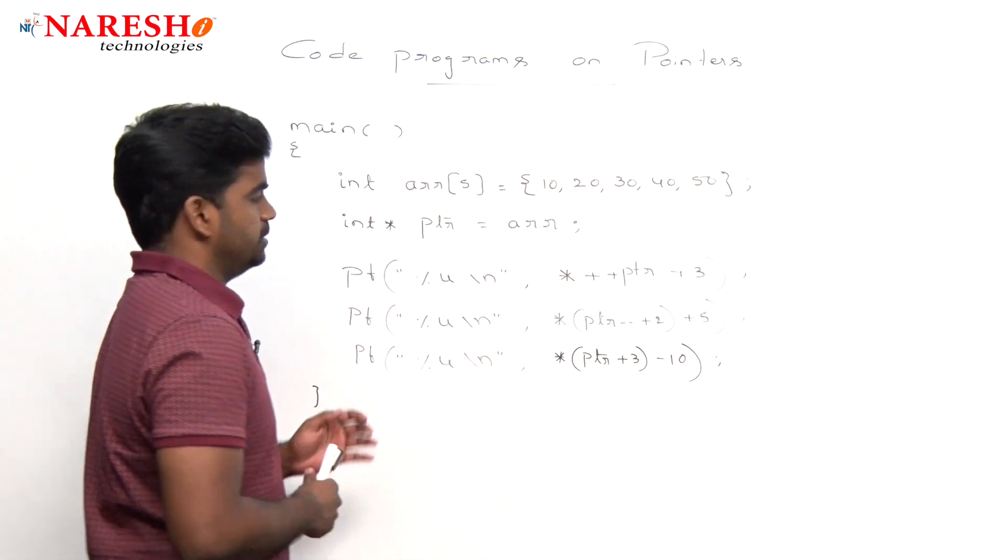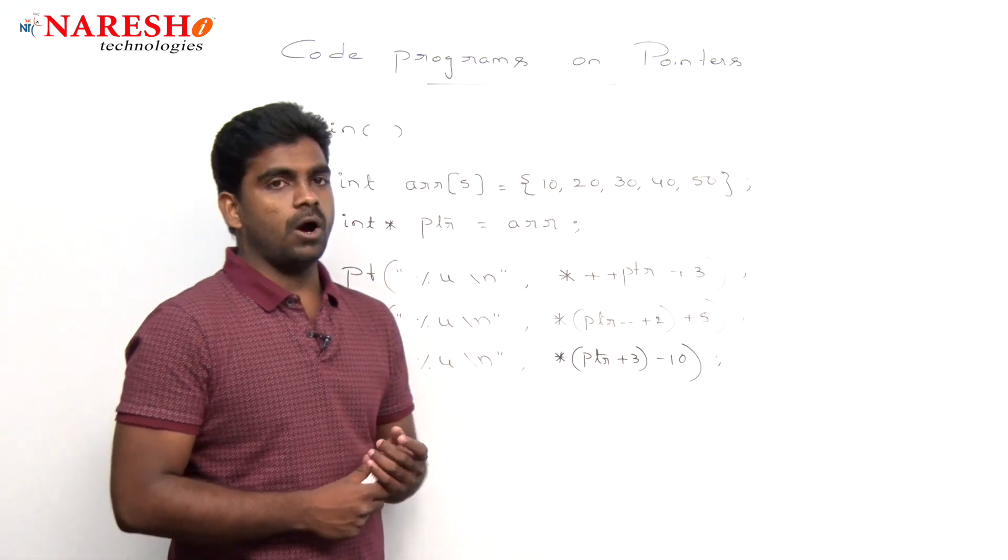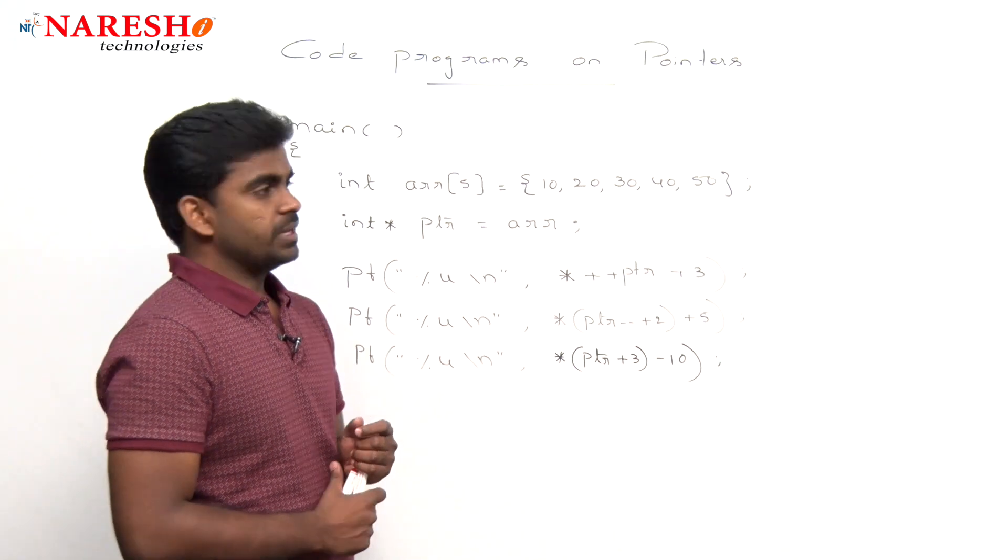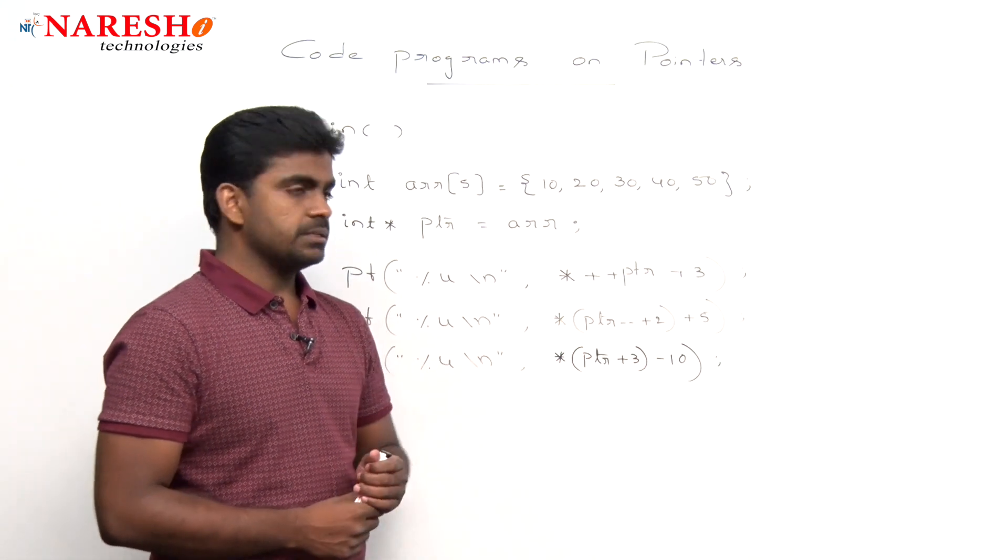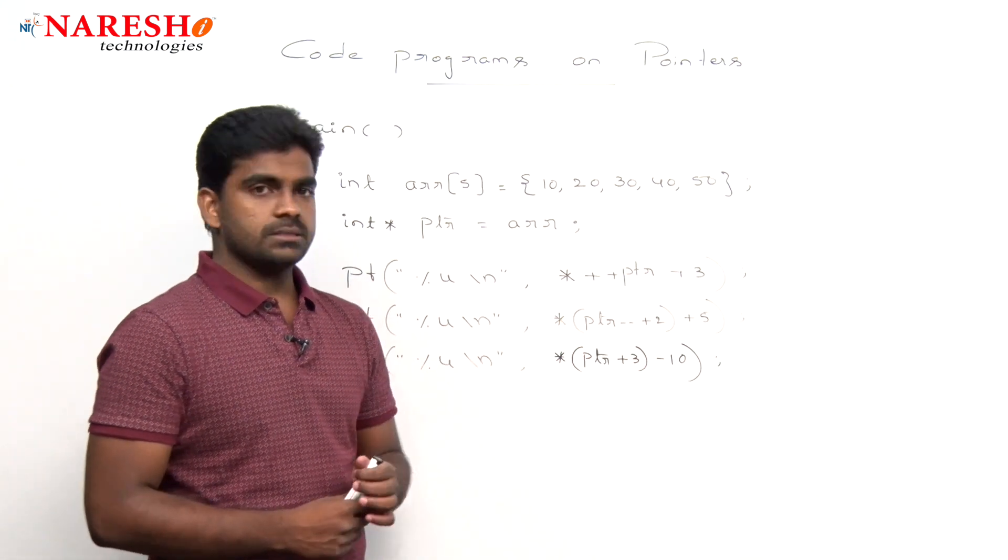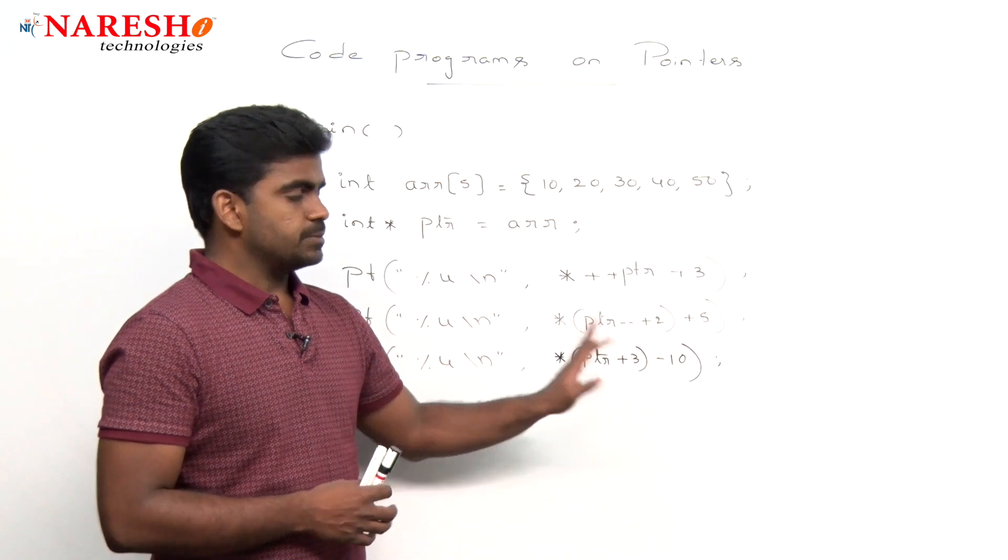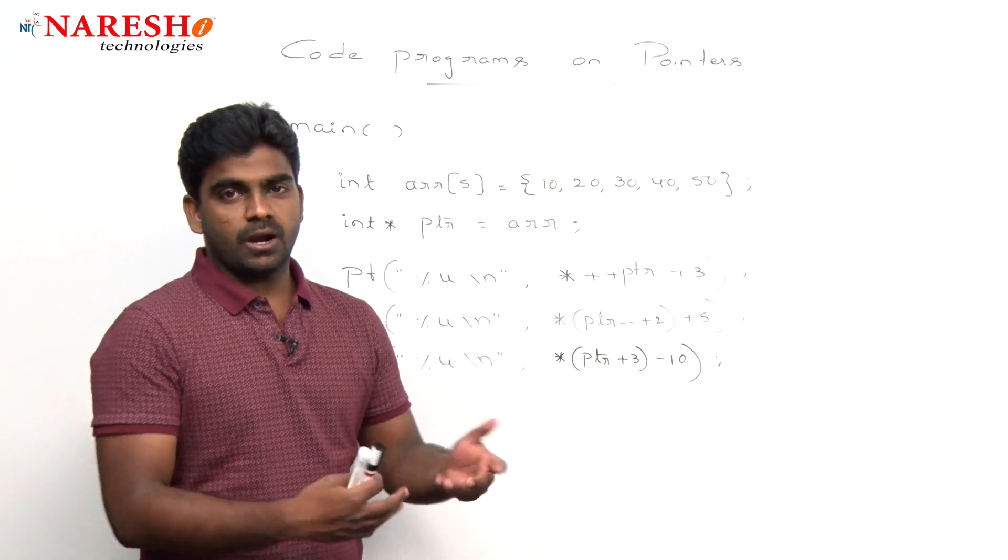This is the code they have given and they are expecting the output to write. Here there are expressions including modify operators, arithmetic operators, and of course pointers. How can we evaluate these expressions? How to give that output?